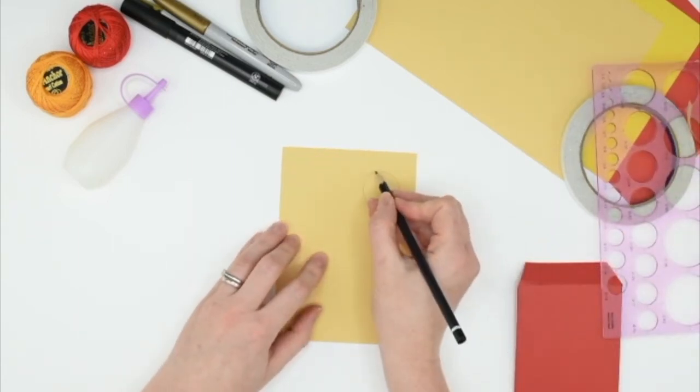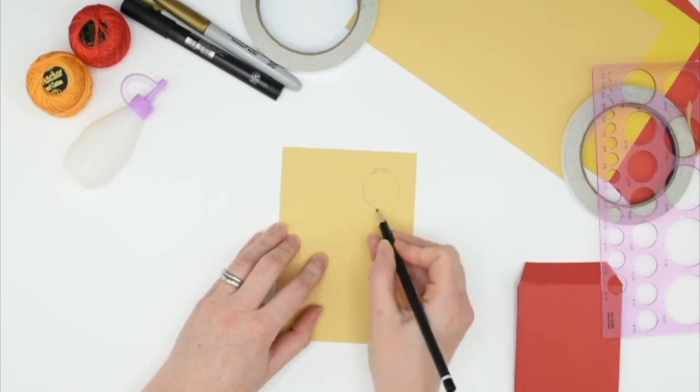I have a template but you can use anything round to draw around. Once you've got your circle, draw a small rectangle at the top and one at the bottom.